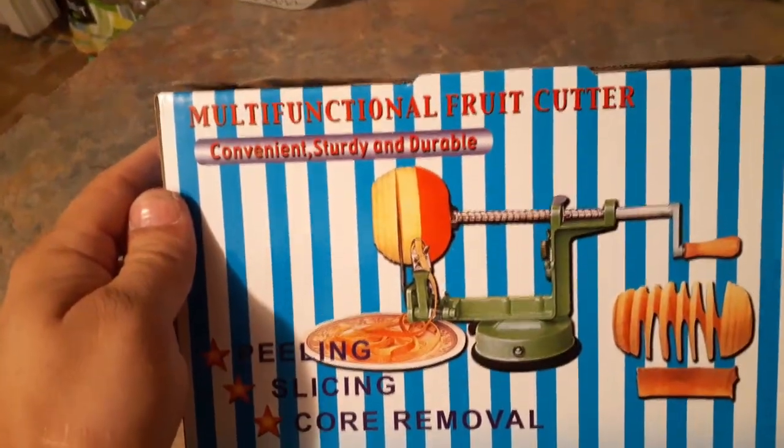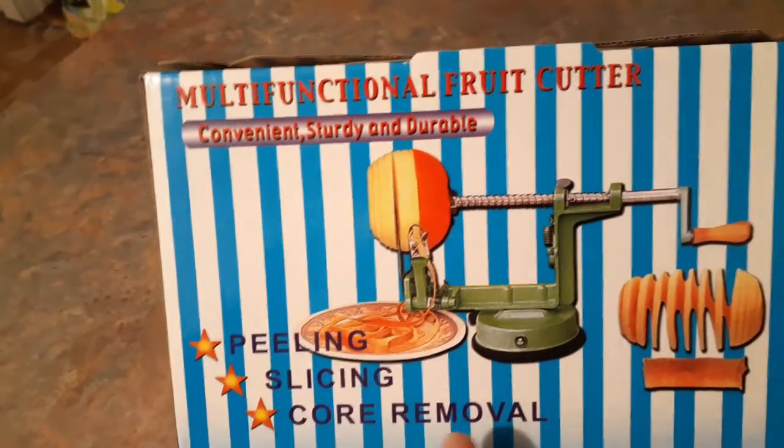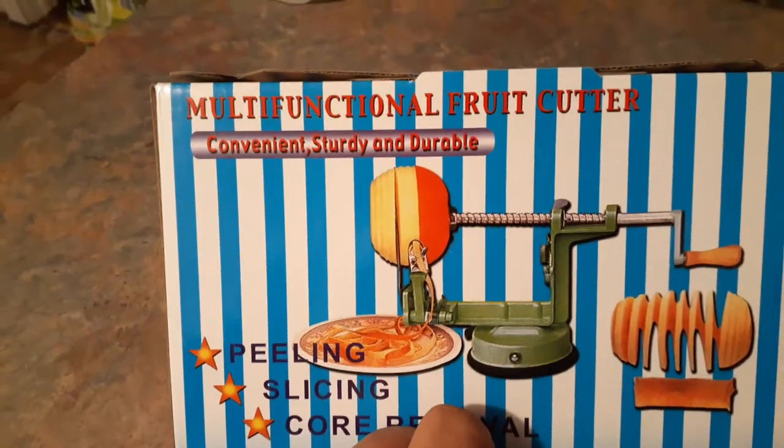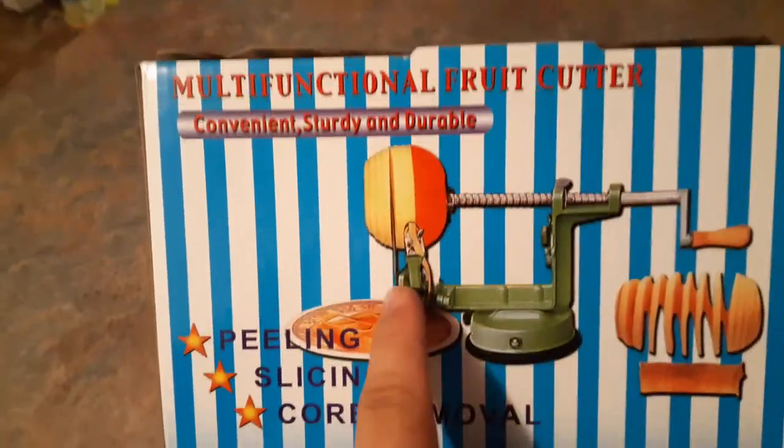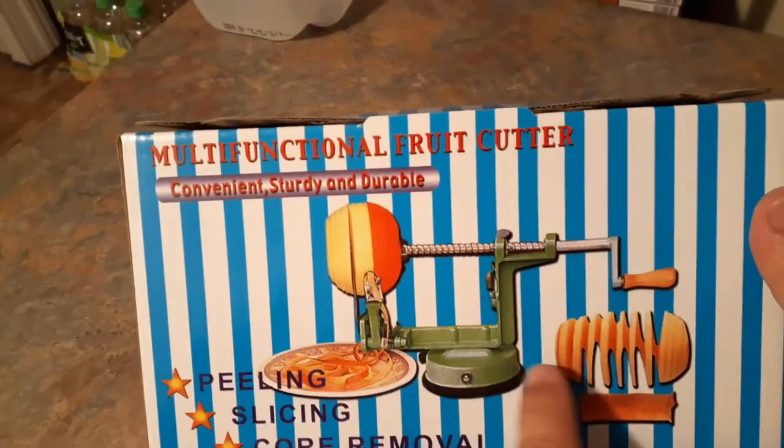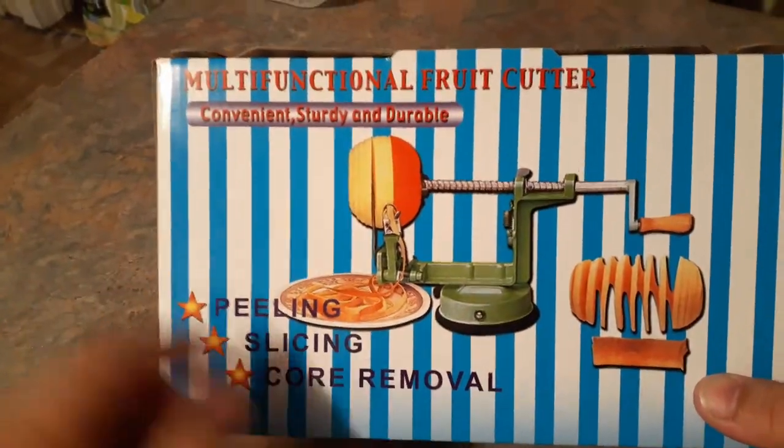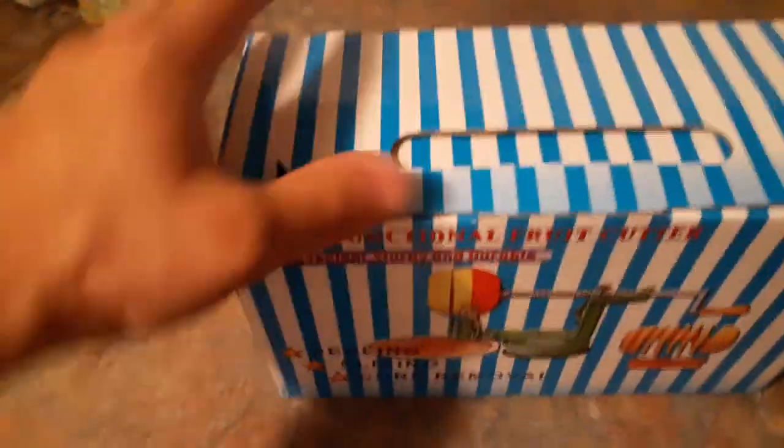As you can see, this is a multi-functional fruit cutter. Right there is an apple that it is peeling, but it's also slicing using a hand crank system. Hopefully that's what it's going to be able to do: peel, slice, and also take out the core.